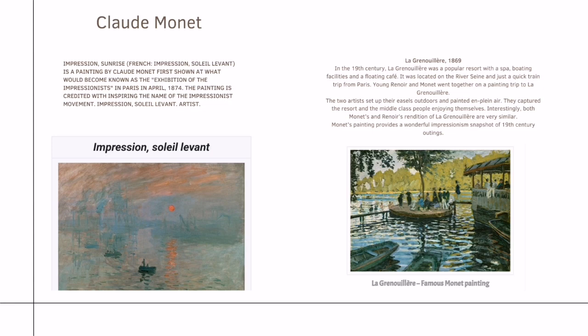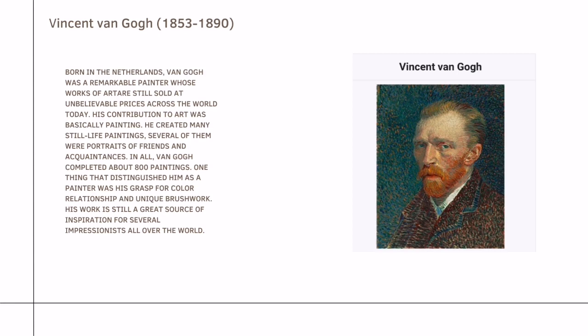Next is Vincent van Gogh. Born in the Netherlands, van Gogh was a remarkable painter whose works of art are still sold at unbelievable prices across the world today. His contribution to art was basically painting — he created mainly still life paintings, and several of them were portraits of friends and acquaintances. In all, van Gogh completed about 800 paintings. One thing that distinguished him as a painter was his grasp of color relationships and unique brushwork. His work is still a great source of inspiration for several Impressionists all over the world.